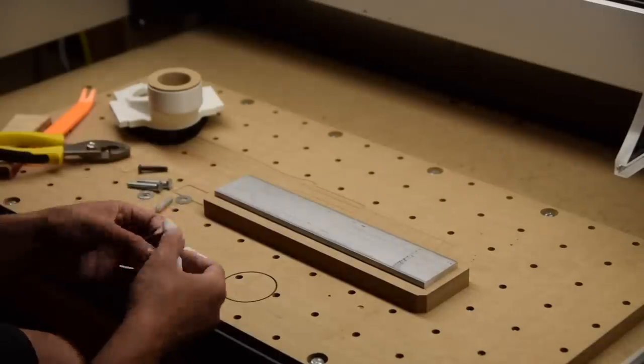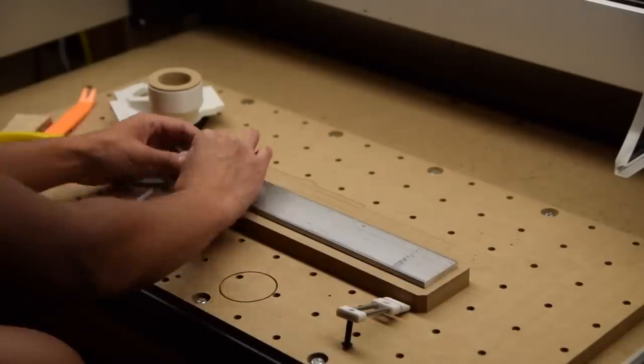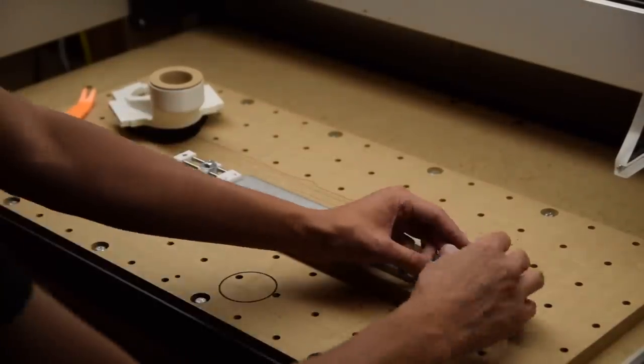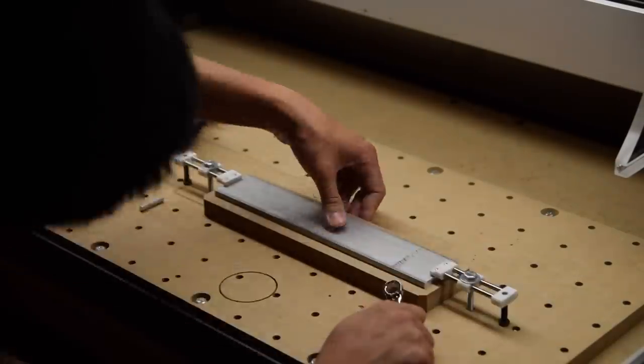I mounted my stock on my MDF platform and used two clamps to secure it. I knew there was a risk of the material deflecting on me as I cut, but it was a risk worth taking if I could get two pieces out of a single length of stock.